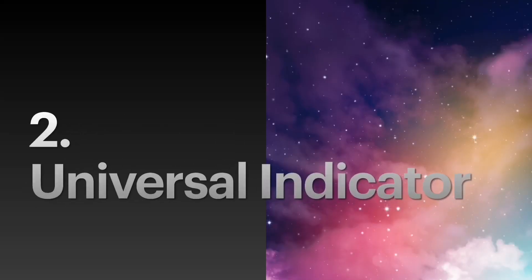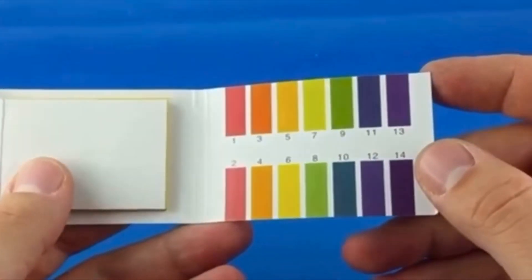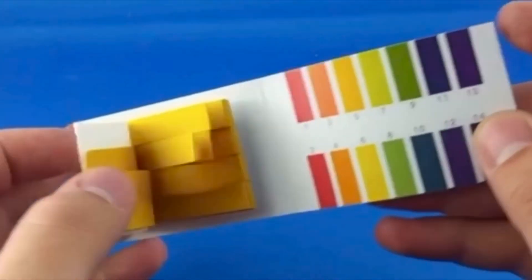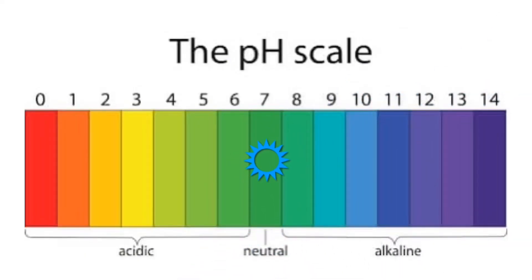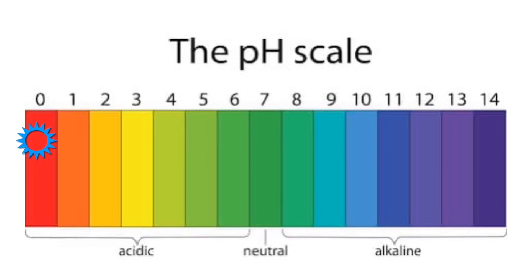The next indicator is the universal indicator. It is a pH indicator made from several compounds that exhibit color changes over a wide range of pH values. The neutral color of the universal indicator is green. When the substance tested is approaching acidic, it changes to orange. When it goes more acidic, it turns yellow. When the acid becomes stronger, it changes to red.